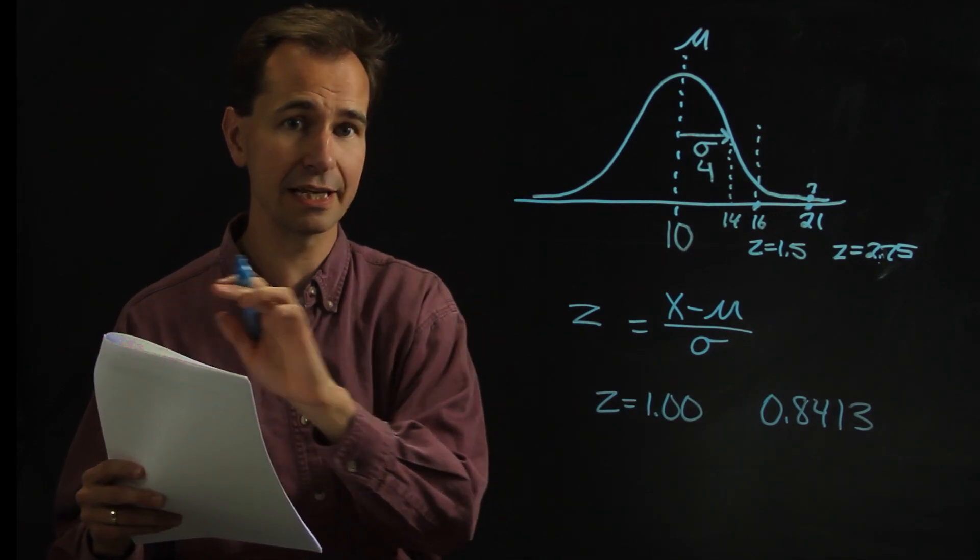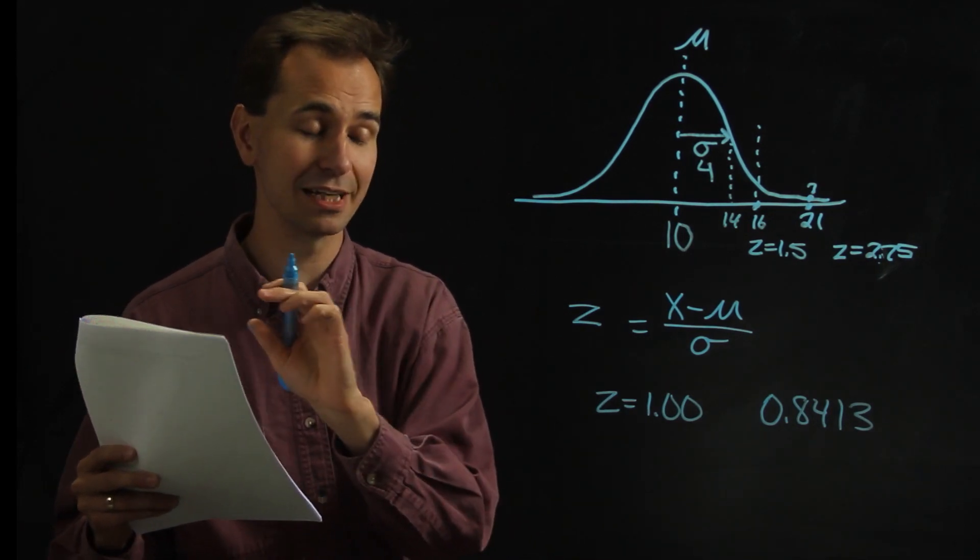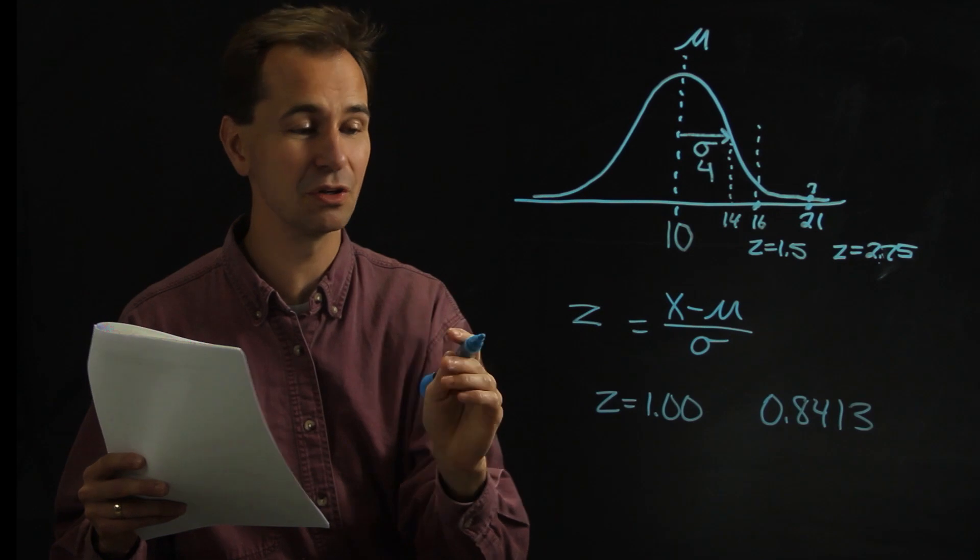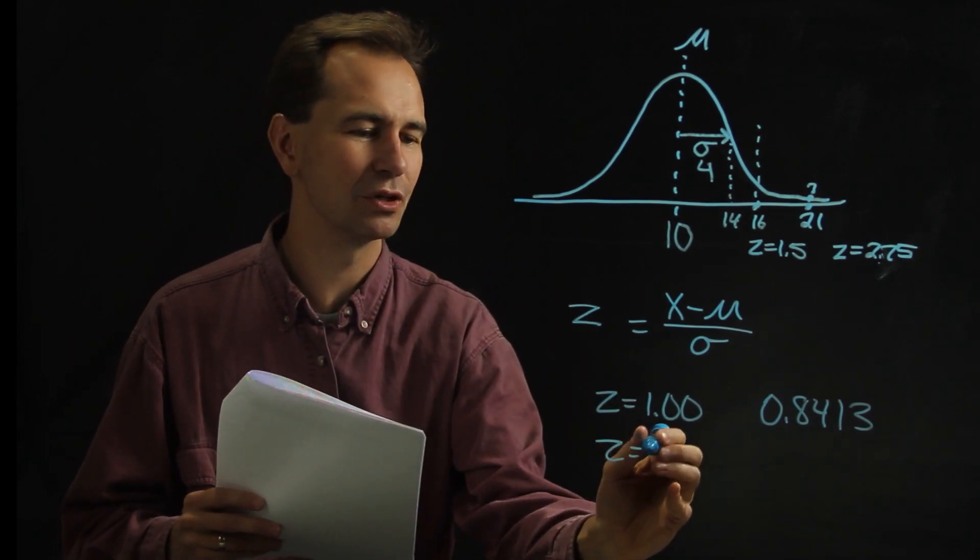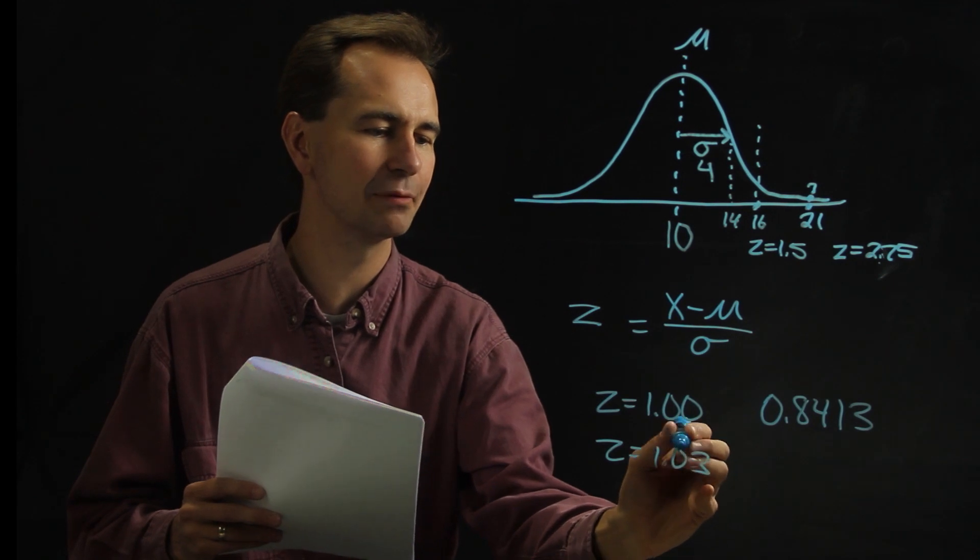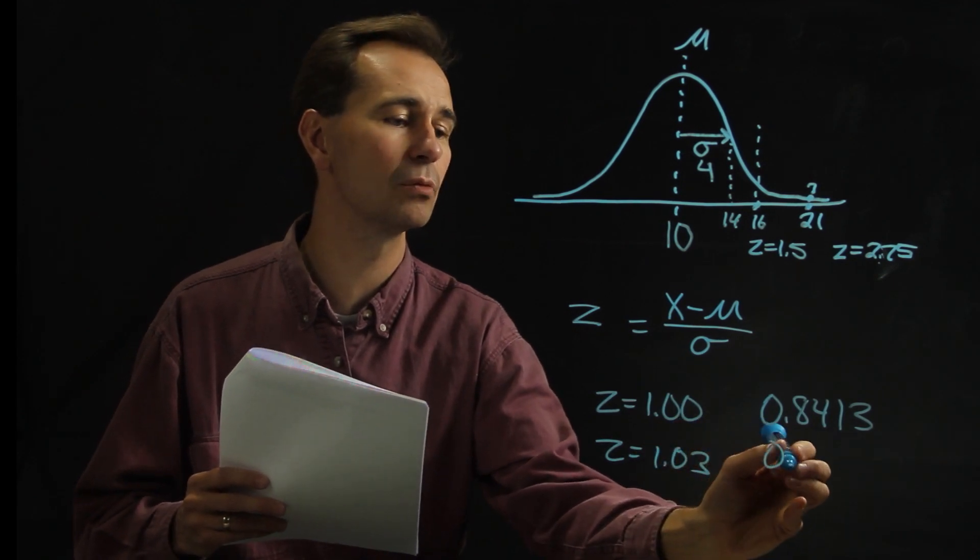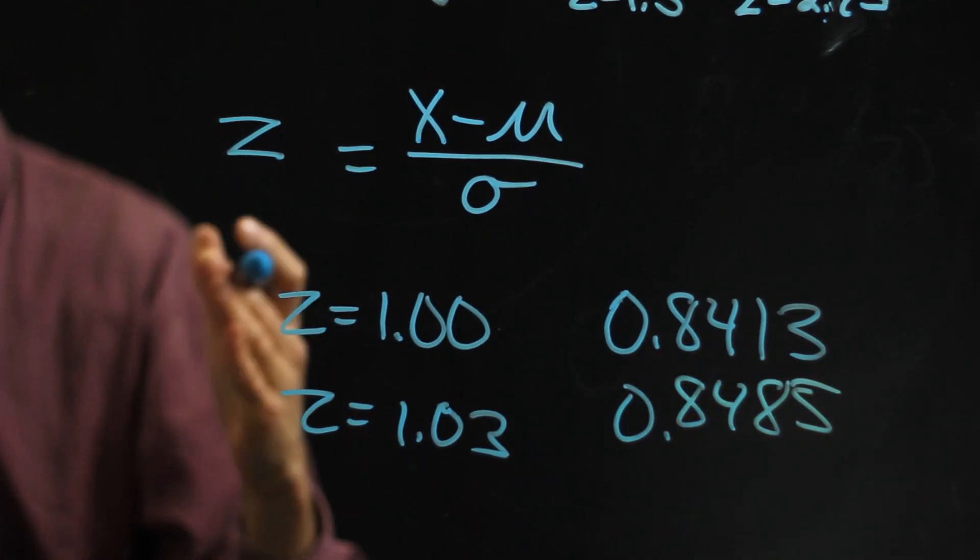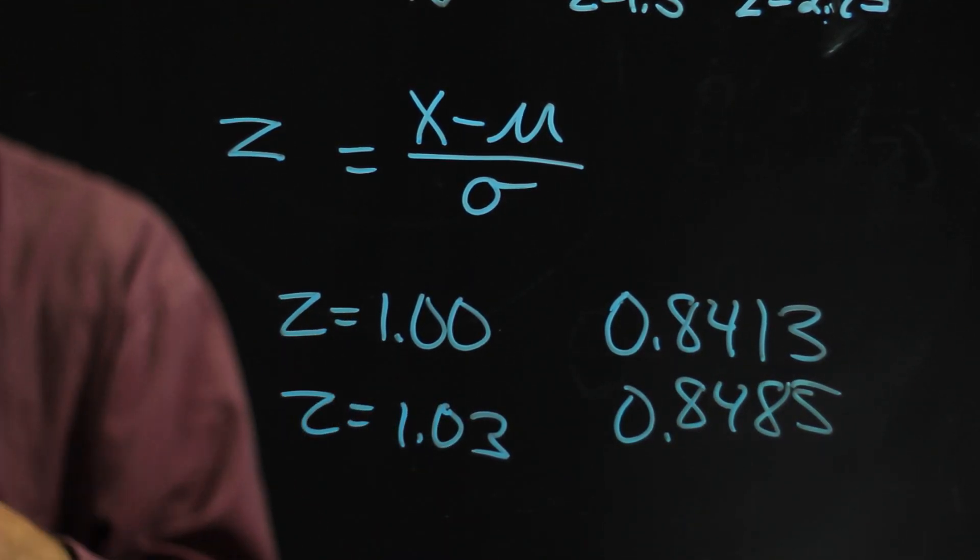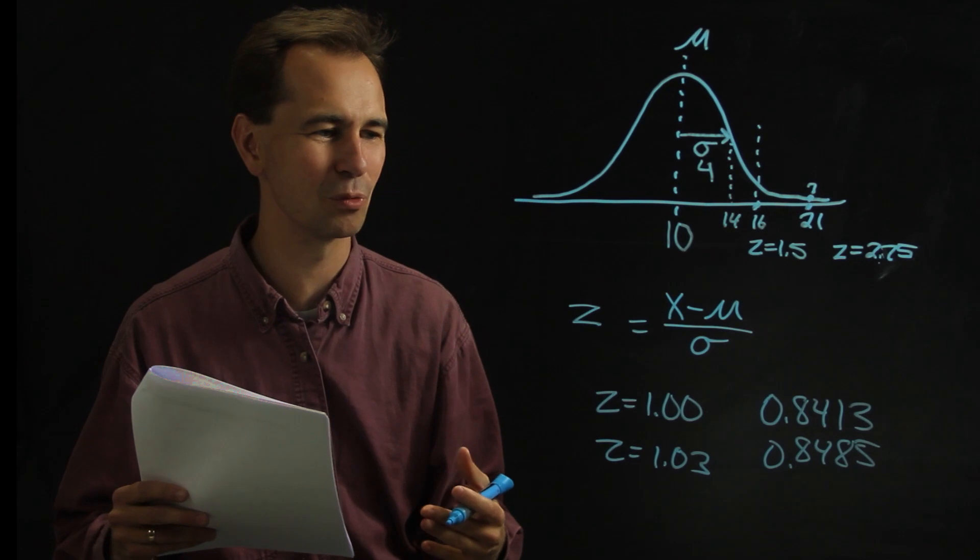Or you could look at the same row of z equals 1.00, and then go over to the .03 column, and when you look at the entry in the table there, you notice that it says 0.8485. So that means that a little bit more of the curve is to the left of that point, in this case 84.85%.